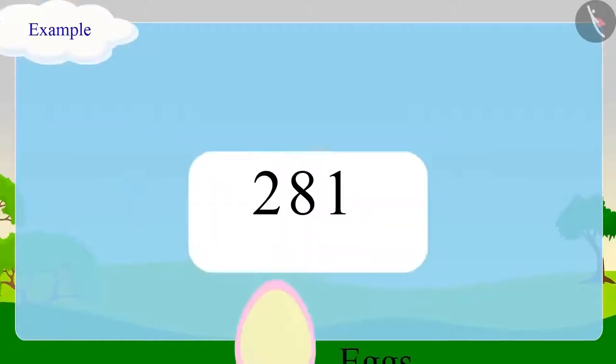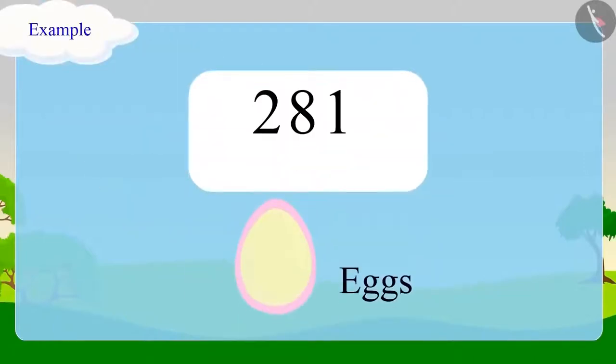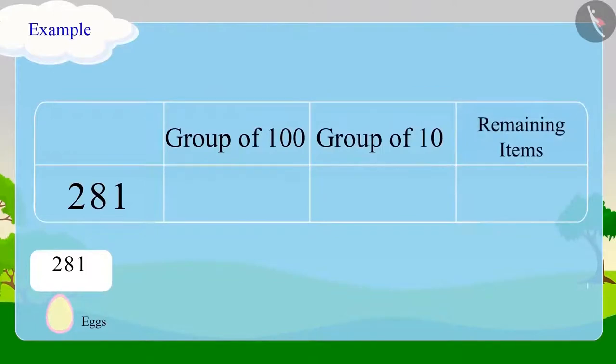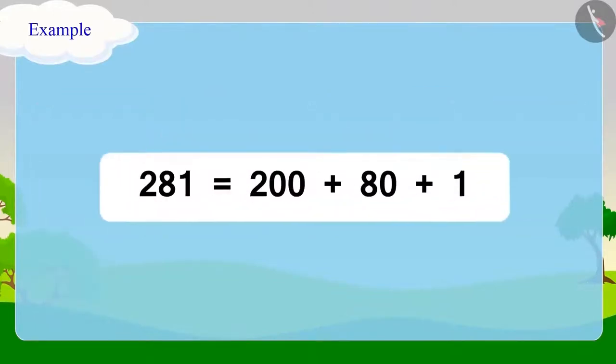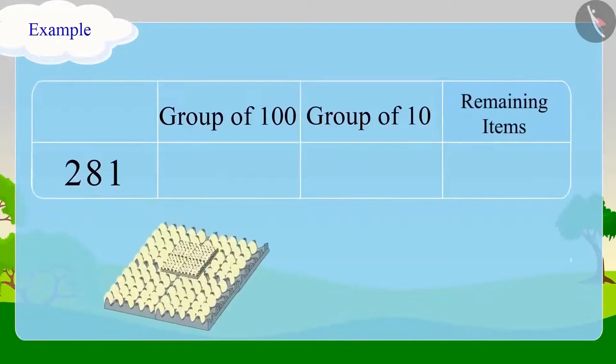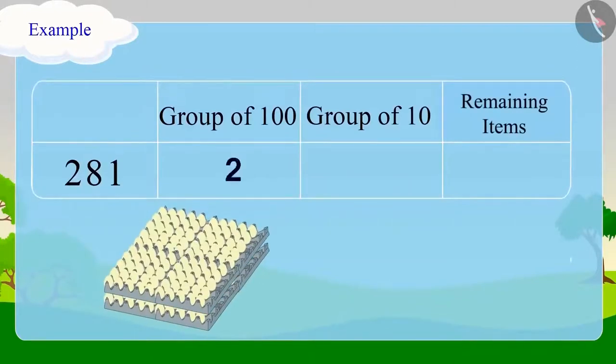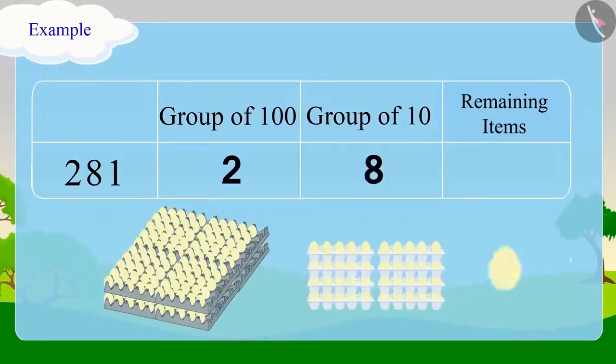Suppose you have to count 281 eggs in the groups of 100, 10 and 1. So first, you write 281 in expanded form. Then by paying attention, you will find that 200 is made up of 2 groups of 100, 80 is made up of 8 groups of 10 and 1 egg does not come in any group.